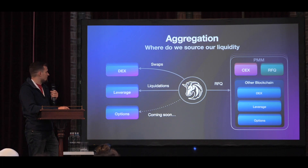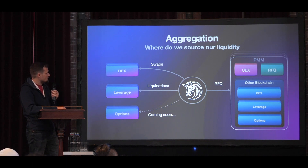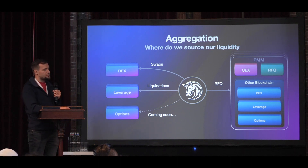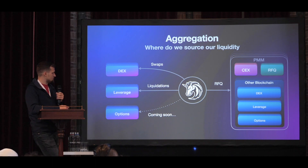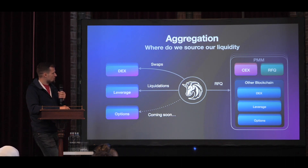What happens in aggregation? An aggregator typically uses spot liquidity from DEXs, can use leveraged liquidity through liquidations, and can also use an RFQ system — which we usually call PMM, or professional market makers. If a user wants to trade something, the aggregator asks professional market makers if they wish to give a quote. And what these market makers are actually doing is bridging liquidity from other environments.